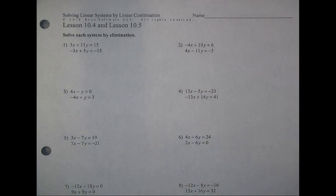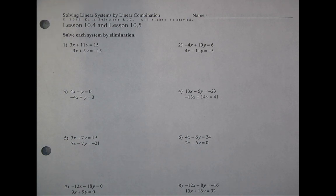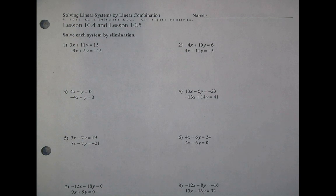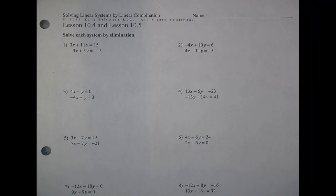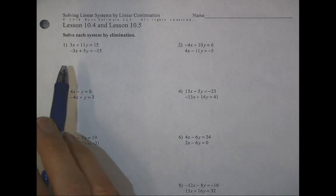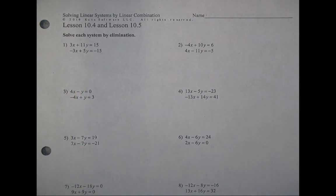This is lessons 10-4 and 10-5's homework assignment and we are going to be solving by linear combination. We're looking for the ordered pair that solves both of the given equations. We've used substitution and graphing so far. With linear combination, we combine the two equations together so that something cancels out in terms of one of the variables, leaving us just one to solve for, and then we plug that answer back in to solve for the other variable.